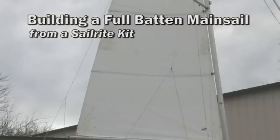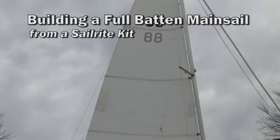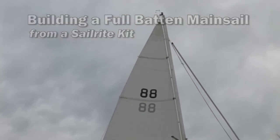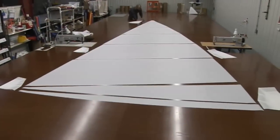In this video we are going to be building a Sailrite Sail Kit. This is a mainsail for the Seaward 24 sailboat. This is a full batten mainsail.